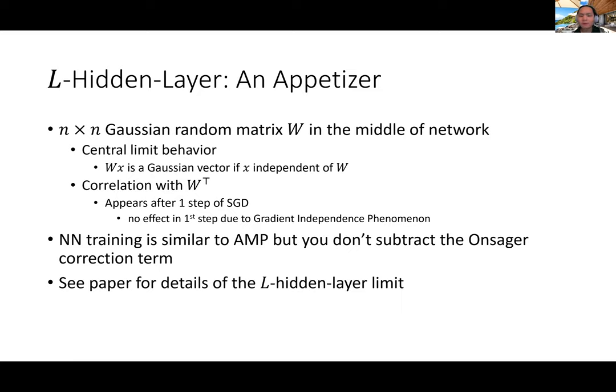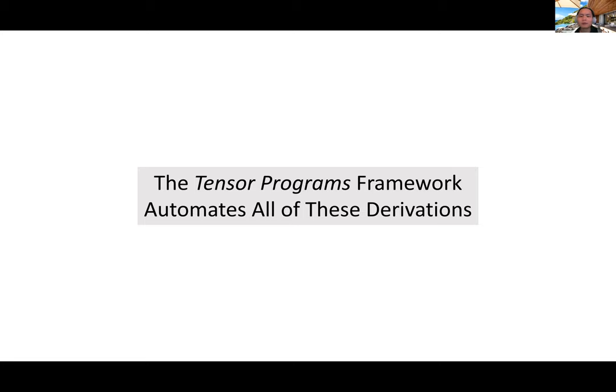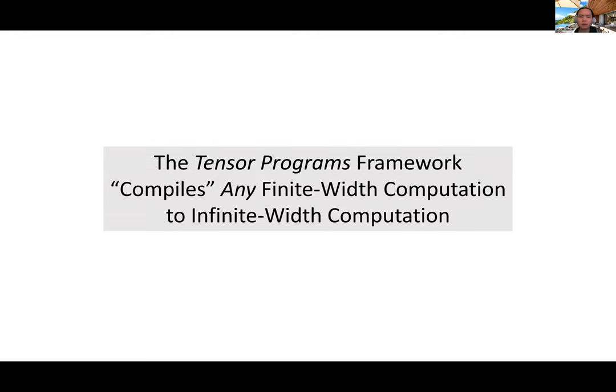The tensor programs framework is an encapsulation of all these insights in a rigorous framework that automates all these derivations. The hand-wavy law of large numbers arguments we made earlier can be made rigorous, and you also need to know whether your width is large enough for the argument to work. You can think of the tensor programs framework as a compiler: it takes any finite-width computation — like a PyTorch run — and returns the correct math to compute the infinite-width limit of that computation, including training.